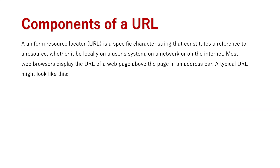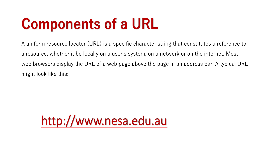Usually you don't see the address of where you're going — you just click on a link, which may be a specific word or image, and in its metadata is the file path, that URL, that takes you to that location. So what is a URL? It stands for Uniform Resource Locator, which is a specific character string that constitutes a reference to a resource, whether stored locally on a person's system, on a network, or on the internet. Most web browsers display the URL of a web page in the address bar at the top.